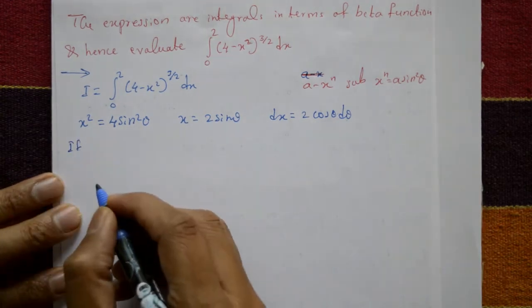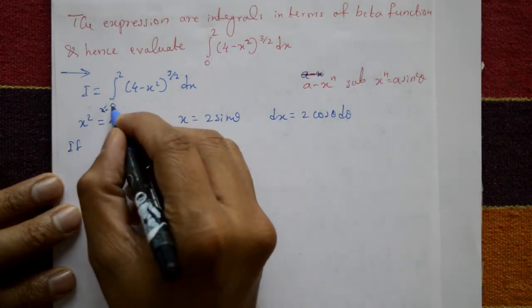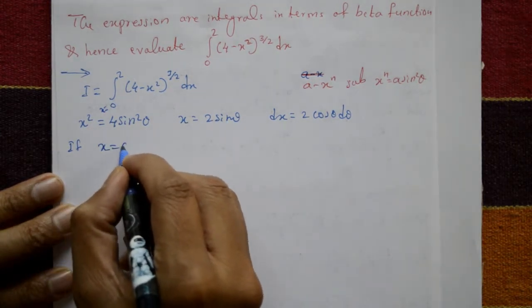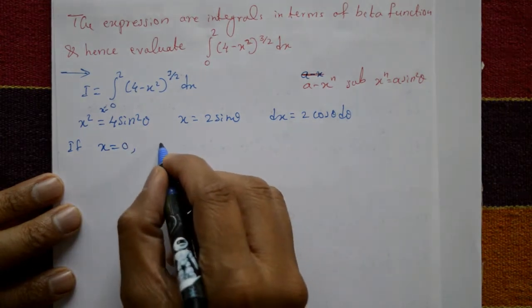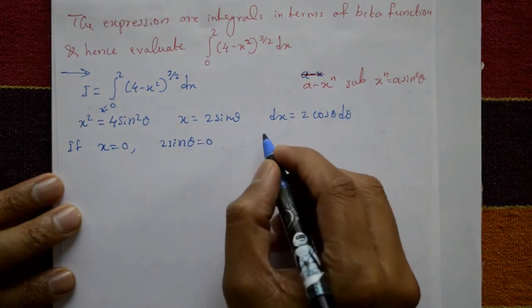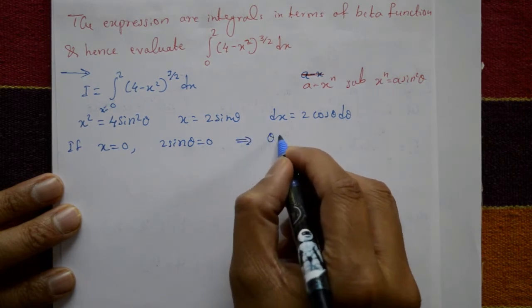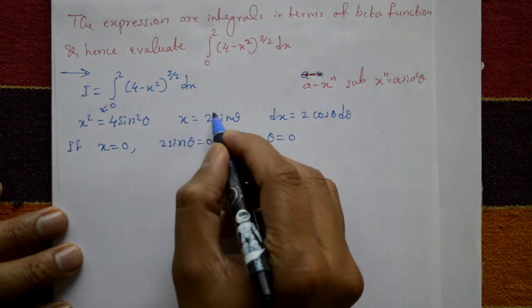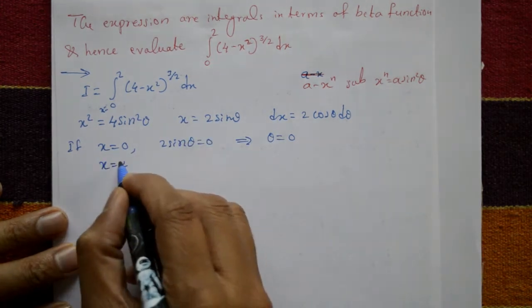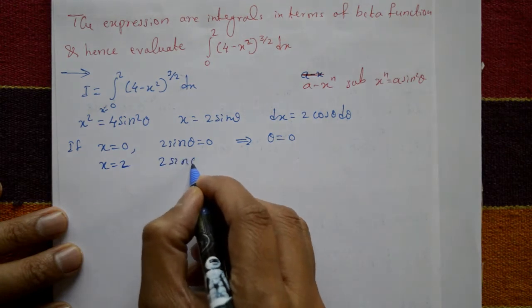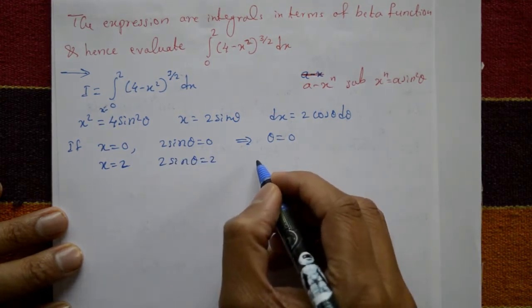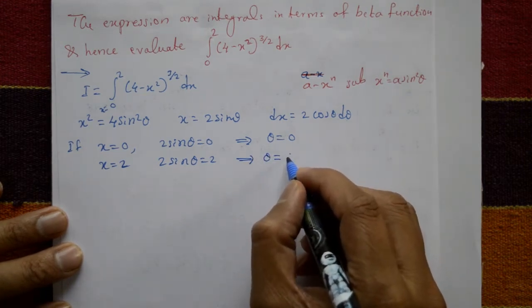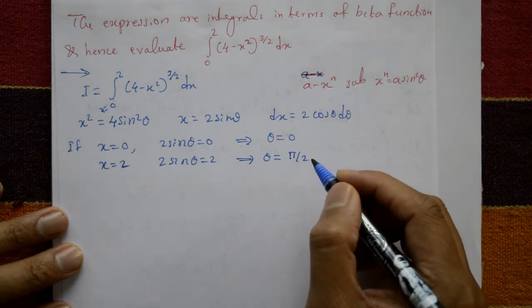Now we convert the limits. When x equals 0, we have 2 sine theta equals 0, so theta equals 0. When x equals 2, we have 2 sine theta equals 2, so sine theta equals 1, meaning theta equals pi by 2.